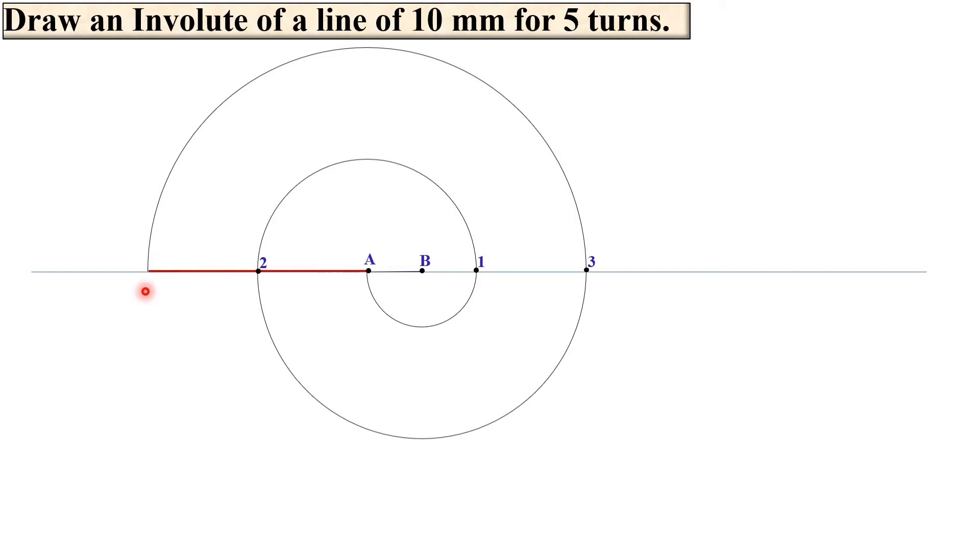So you will get the intersection point over here. Mark it as 4. So this is for the fourth turn.